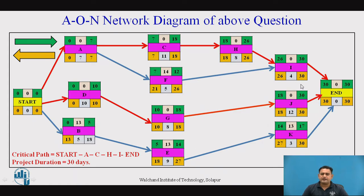Finally there is an end node with duration zero, and the links between I, J, and K are shown accordingly. If you observe this entire network diagram, it is clear that all activities have a finish-to-start relationship and there is no lag or lead time between any activities.